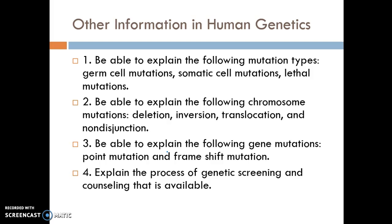Be able to explain the following mutation types. Germ cell mutations are mutations that occur in the egg and sperm, or the gametes — these are going to affect the offspring, not the individual. Somatic cell mutations are mutations in your body cells — these are going to affect you but will not affect your offspring. Lethal mutations are mutations that cause death, and often death occurs before the individual is born, causing miscarriage.